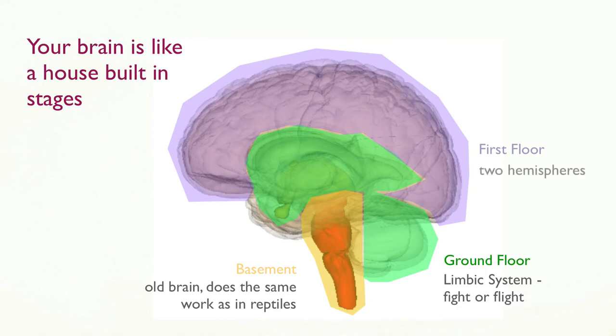The first floor consists of the two hemispheres of your brain and they are responsible for functions like thinking and perceiving. Finally, the latest addition to your brain is the wrinkly layer that you see in most pictures of the brain, and this is called the cerebral cortex which is divided into four lobes and it is responsible for functions like planning, judging and abstract thinking.